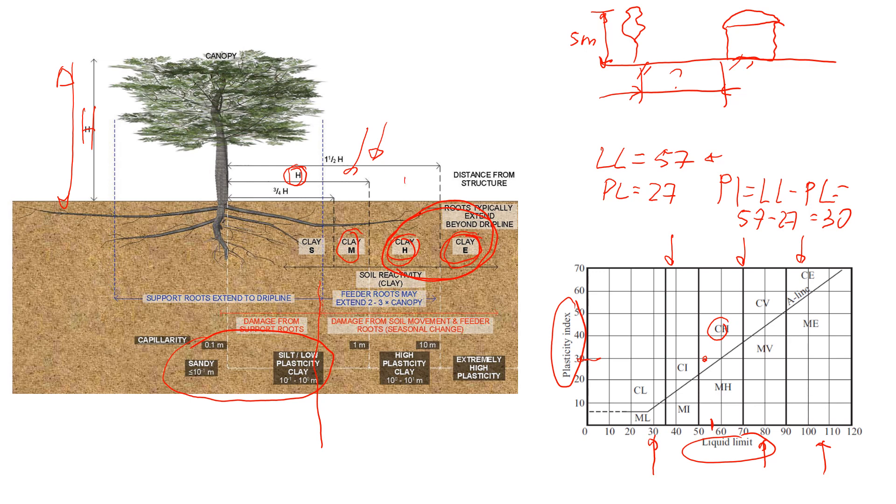High plasticity clay is here. So according to these guidelines, the distance should be at least equal to H, and H is 5 meters. In this case, we make sure that roots are not going to dry up the soil around this very light engineering structure and it's not going to affect it over long periods of time with swell and shrinkage.